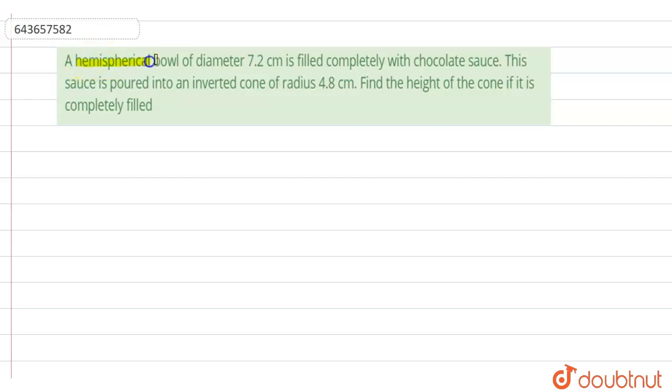It is given a hemispherical bowl of diameter 7.2 centimeter is filled completely with chocolate sauce. This sauce is poured into an inverted cone of radius 4.8 centimeter. We have to find the height of cone if it is completely filled.